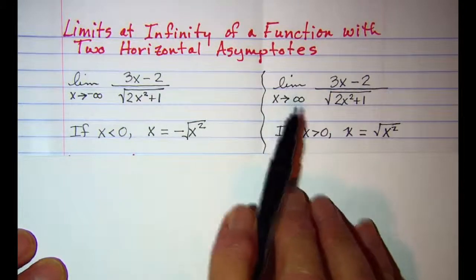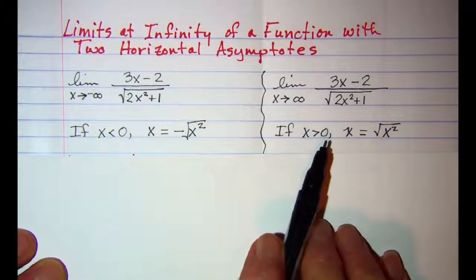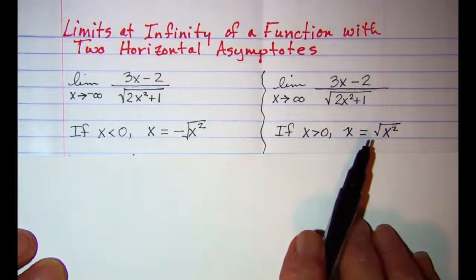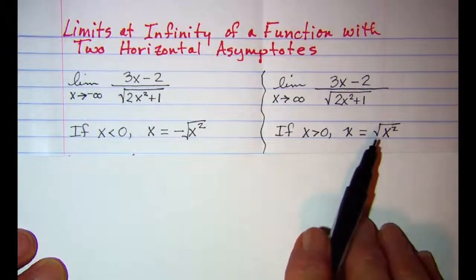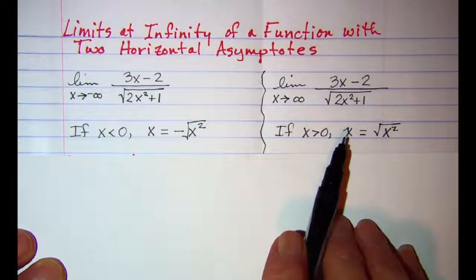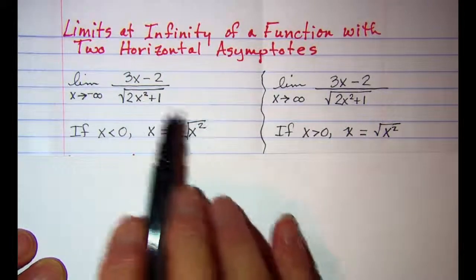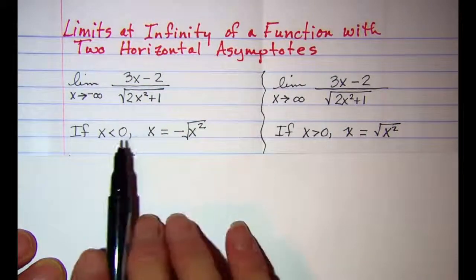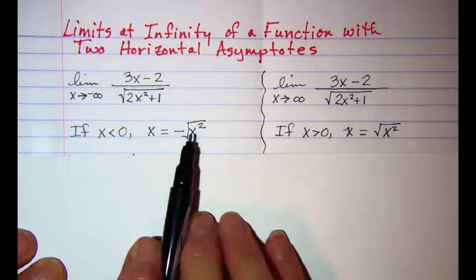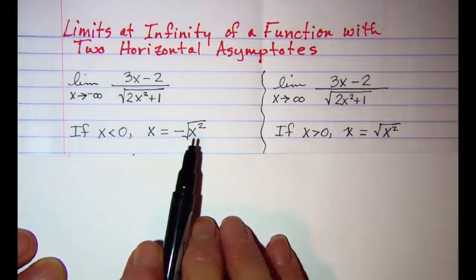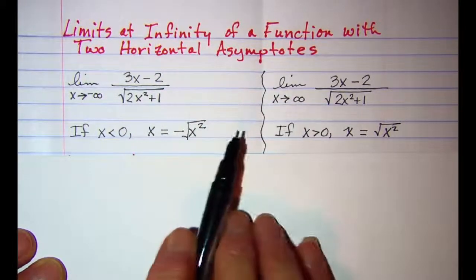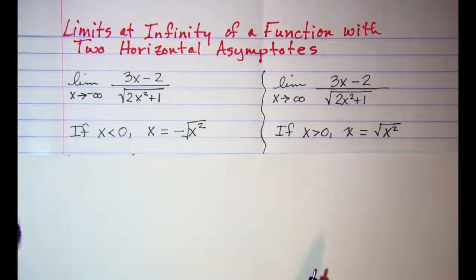The reason we need two separate cases is because when x is positive, the square root of x² is just x, but when x is negative, x equals the negative square root of x², because you have plus or minus on that.